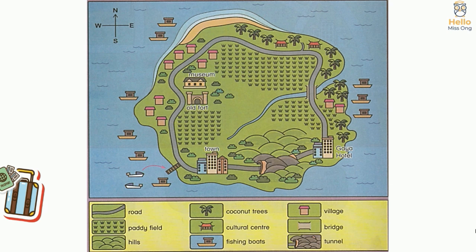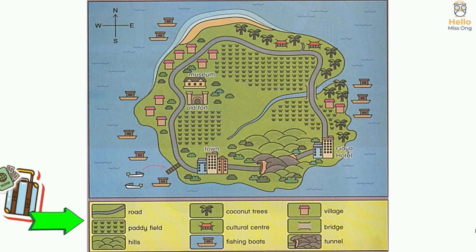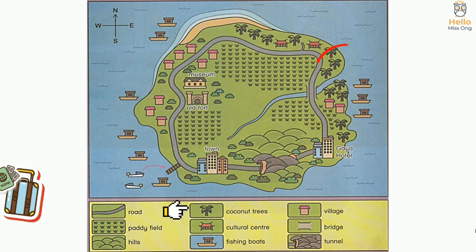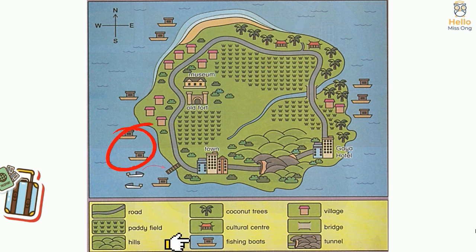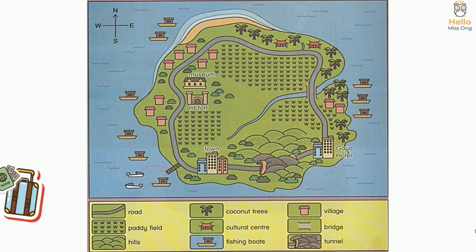From the map we can see there's a compass. There's also a map key to show us the symbols on the map — for example: road, paddy field, hills, coconut trees, cultural center, fishing boats, village, bridge, and tunnel.